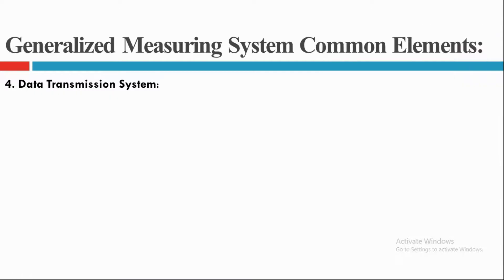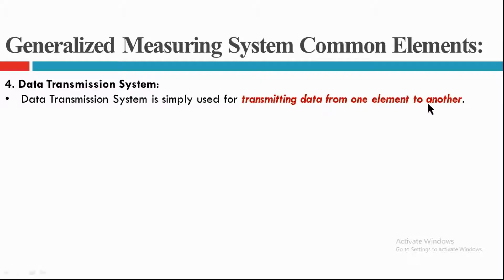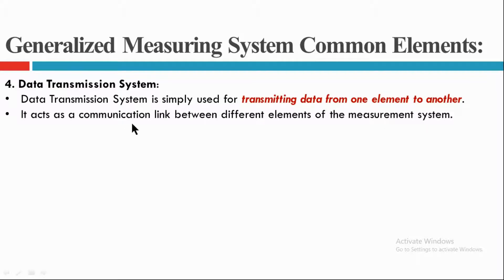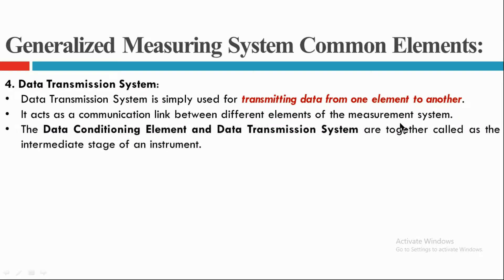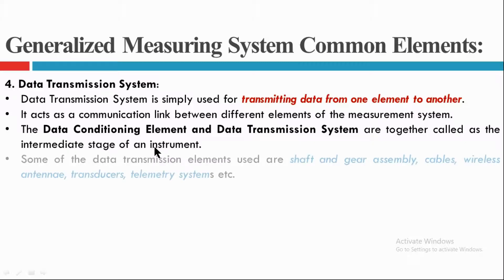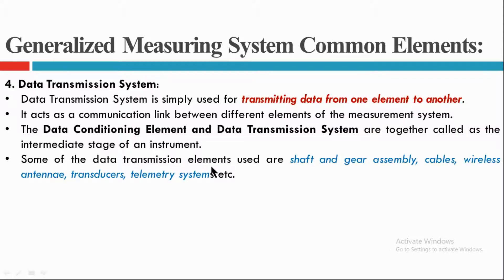The next one is the data transmission system, which is simply used for transmitting data from one element to another. It also acts as a communicating link between two different types of elements in the measuring system. The data conditioning element and the data transmission system together are called the intermediate stage of an instrument. Gear assemblies, cables, wireless antennas, and transducers are a few examples of data transmission elements.